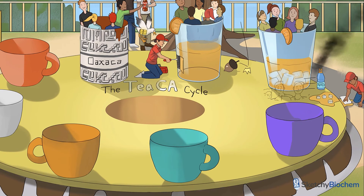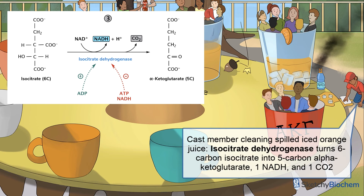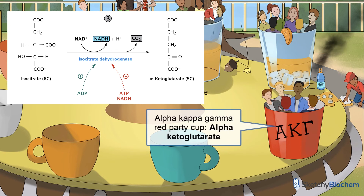In step 3, isocitrate dehydrogenase will oxidize 6-carbon isocitrate to 5-carbon alpha-ketoglutarate. We've included another hardworking cast member cleaning up some spilled iced OJ. This cast member is isocitrate dehydrogenase, and he's got a towel just like all our dehydrogenases. There's an NADH drink and some black smoke, so you'll remember that this rate-determining step produces one NADH and one carbon dioxide.